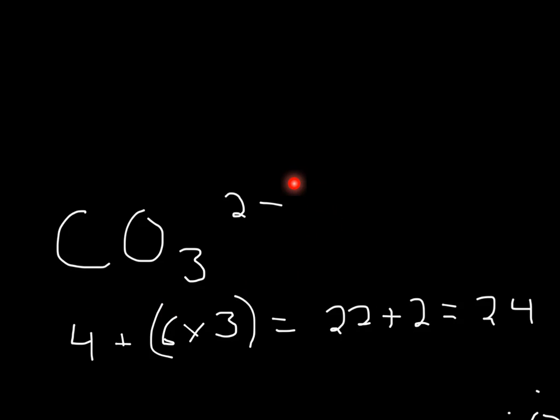To find the resonance structure of CO3 2-, what you're going to do is first find a Lewis structure that's very stable.